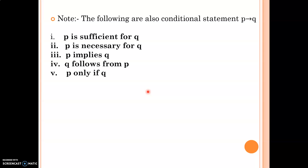The following are also conditional statements equivalent to P implies Q: 'P is sufficient for Q', 'P is necessary for Q', 'P implies Q', 'Q follows from P', 'P only if Q'. In all these cases, in the place of P and Q you substitute simple statements.